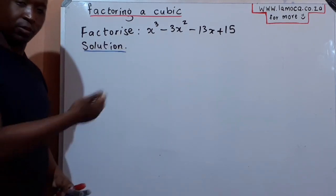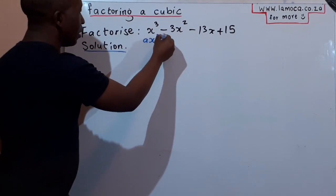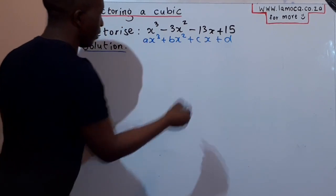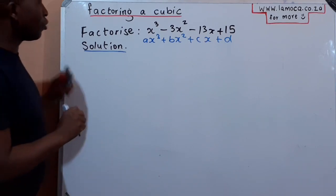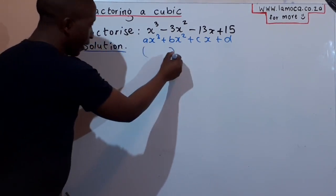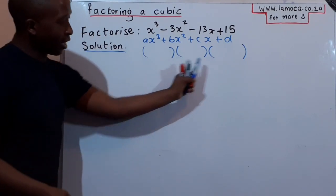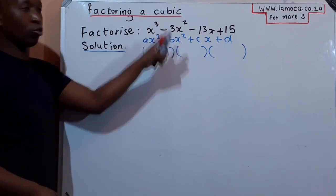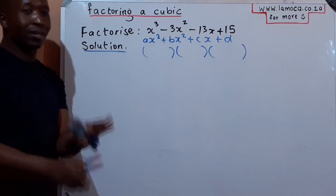Every cubic expression is in the form ax³ + bx² + cx + d. That's the first thing we need to understand. The other thing is that when you are factorizing a cubic, you're going to get three factors — a first, second, and third factor. We are looking for three factors because the highest exponent on any cubic expression is three, so we expect three factors, though sometimes they repeat.